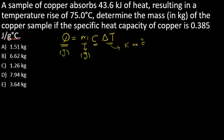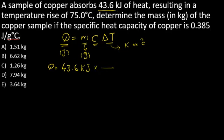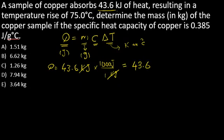From the question, Q is 43.6 kilojoules, but we need it in Joules. Multiplying by the conversion factor — one kilojoule equals one thousand Joules — we can cancel kilojoules, giving us Q = 43.6 × 10³ Joules.